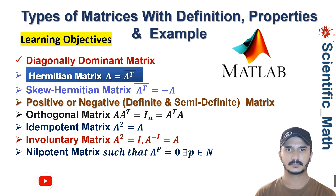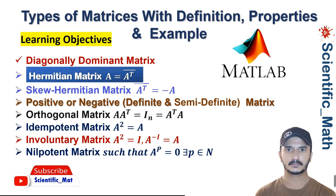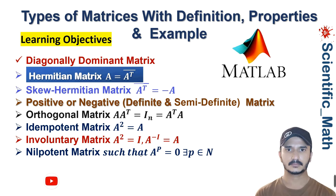Welcome to YouTube channel scientific_math. We are discussing types of matrices with definition, properties, and examples. In the previous lecture we discussed the diagonally dominant matrix — I will provide the link in the video description. In this lecture we will discuss the Hermitian matrix: its definition, properties, and examples. So let's start.